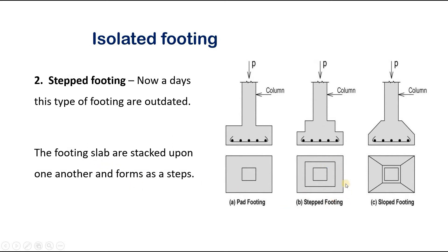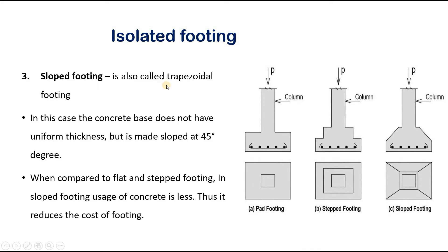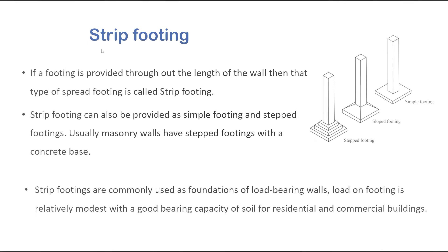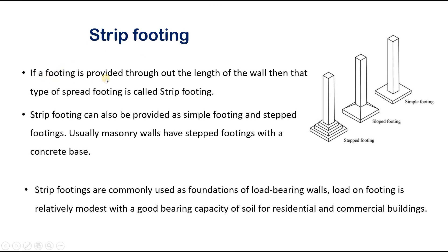Step footing is nowadays outdated. In this type, the footing slabs are stacked one upon another forming steps, as shown in the figure. Sloped footing, also called trapezoidal footing, has a concrete base that is not of uniform thickness but is sloped at a 45-degree angle. Compared to flat and step footing, sloped footing uses less concrete, reducing cost. For most constructions, sloped footing or flat footing is preferred.